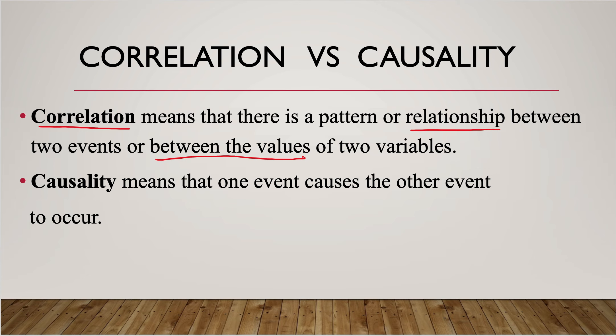Causality means that one event actually causes the other one to occur — not just a relationship, but a relationship where one event causes the other event to occur. So correlation is like level one. You can say that two variables are correlated if they are related in some way, but causality is a stronger statement. It means that one event actually causes the other one to happen.